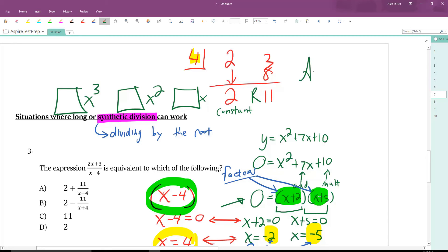So our answer is 2 remainder 11. Another way to say that is 2 plus 11 over the thing you're dividing by, which was x minus 4. That brings us to answer A.